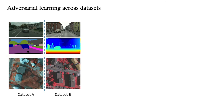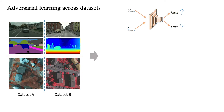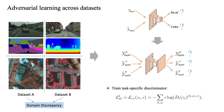Similar to GAN-based methods, we minimize the cross-entropy loss for the task-specific discriminator. Most GAN-based methods design the discriminator to distinguish whether the distribution is from the ground truth or the prediction of unlabeled data. Differently, our method deals with the cross-dataset setting with large domain discrepancy. Thus, we introduce a discriminator module that can tell which domain the prediction comes from — either the ground truth or the prediction of different domains.